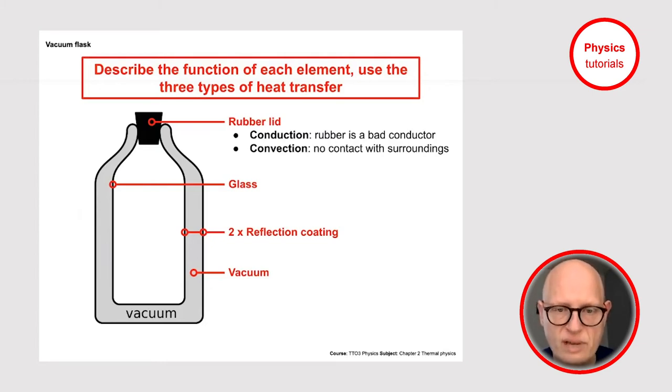It also prevents convection because just imagine without a lid at all. A lot of heat energy would escape the vacuum flask by the hot air which escapes the flask, and then cool air would enter the vacuum flask. That process of convection would cool down the hot drink very rapidly. So it's very good that the vacuum flask is closed so that there can be no contact with the surroundings.